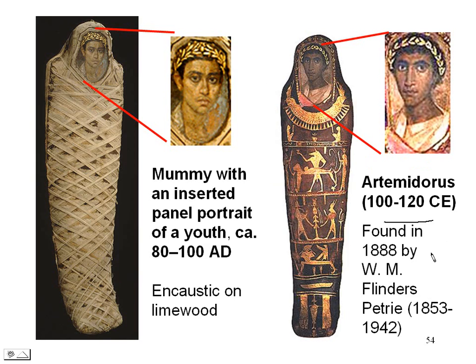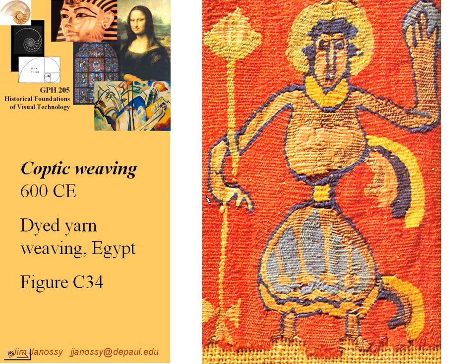Here's an example of weaving. The reason we're taking a look at this is that it uses dyed yarn. Dyeing means making up a colorful liquid and using that liquid to impart color to cloth — either cloth made from animal fibers or plant fibers. In this case we see blue yarn, yellow yarn, red yarn, and some other type of lighter brownish yarn, woven into a backing of some kind of coarse fiber, almost like a rug might be made.